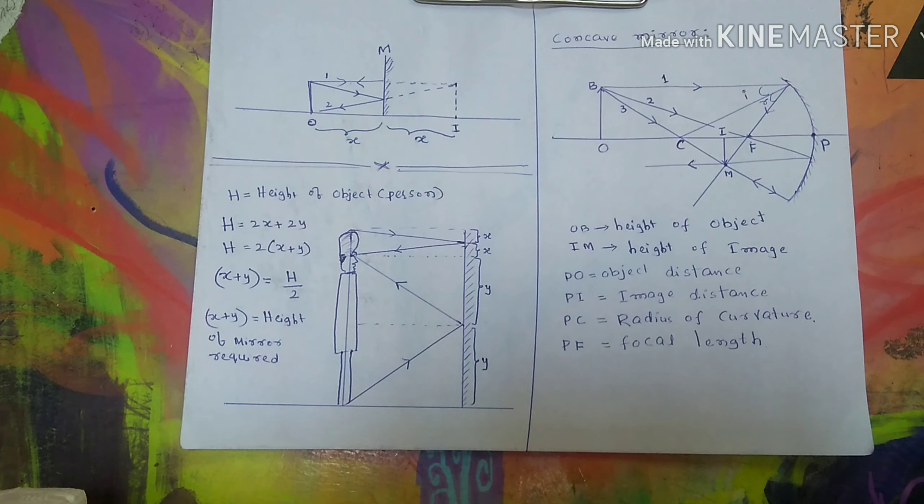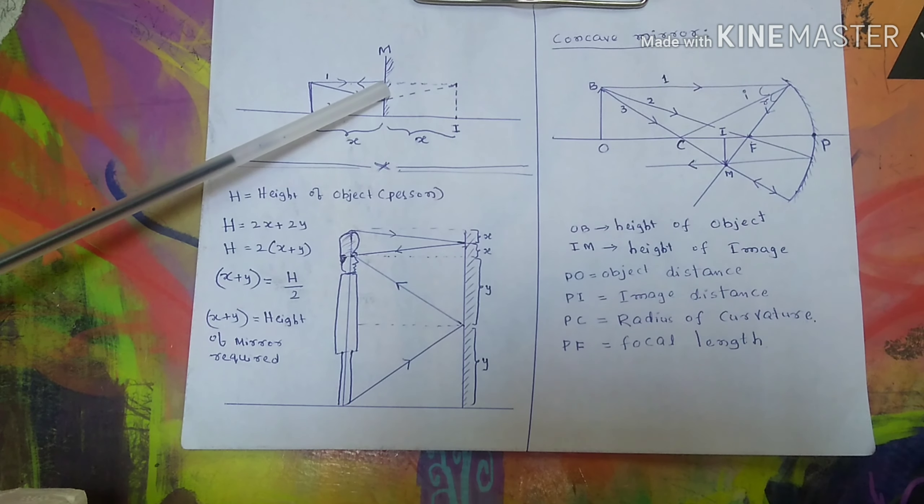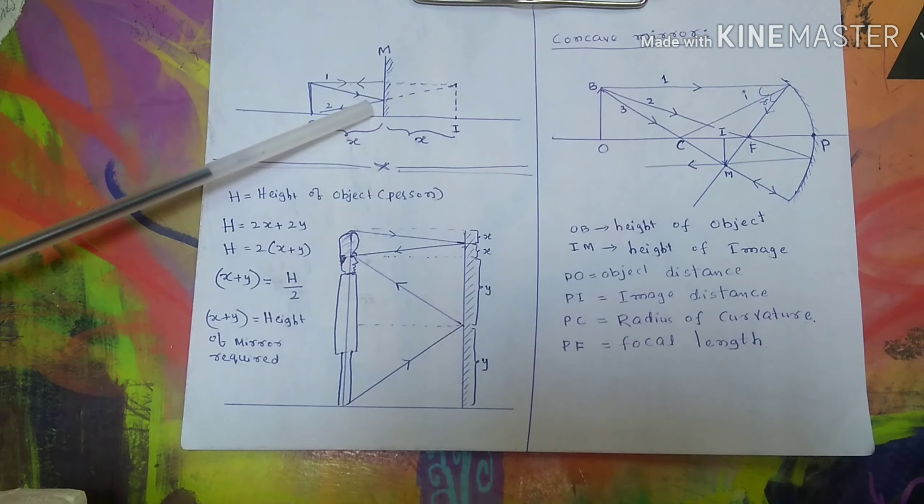Hi students, welcome to my channel. This is Light in Physics, for 10th standard students. In this video I discuss what is a plane mirror, how image forms in a plane mirror, what must be the minimum height of the mirror required to see your complete image, and also concave mirrors — what is a concave mirror, what are the parameters involved, and how image forms by the concave mirror. Please keep watching.